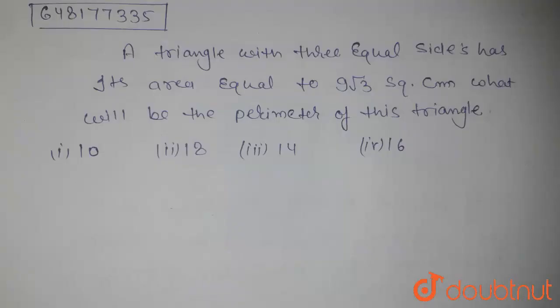Hello friends, the question states: a triangle with 3 equal sides has its area equal to 9 root 3 square centimeter. What will be the perimeter of this triangle? Options given are 10, 18, 14 and 16.